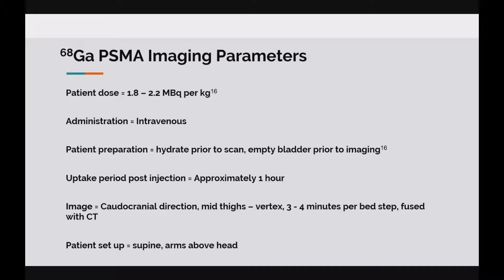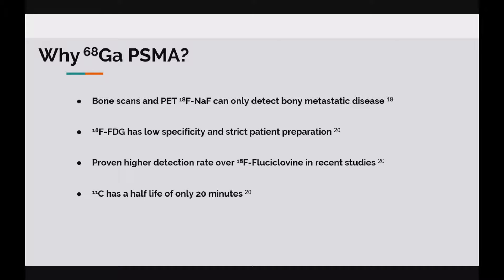Patient dose is approximately 1.8 to 2.2 megabecquerels of activity per kilogram of body weight. There is no preparation prior to injection other than keeping hydrated, but afterwards there is a one-hour uptake period and the bladder should be emptied prior to imaging to remove activity accumulated in overlying structures. An image is taken typically from vertex to mid-thighs and is fused with a CT taken at the end of acquisition. Gallium PSMA is the ideal imaging procedure due to its proven abilities over other tracers. Its ability to detect lymph node and soft tissue metastases makes it superior in evaluating spread over bone scans and 18F sodium fluoride scans. Gallium PSMA also has a higher detection rate compared to 18F fluciclovine scans, and higher specificity than 18F FDG due to FDG being extremely sensitive to a number of pathologies.